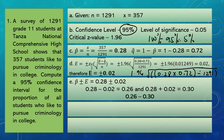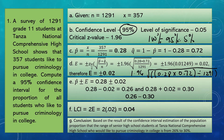To find the length of the confidence interval estimation, we use LCI equals 2E. So, 2 times 0.02 gives us a length of 0.04. Based on the result, the proportion of senior high school students at Tansan National Comprehensive High School who would like to pursue criminology in college is from 26% to 30%.